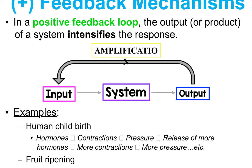Another example of positive feedback is childbirth. Hormones instigate contractions, contractions cause pressure, and that pressure releases more hormones which cause more contractions and more pressure. Or fruit ripening: fruit ripens and releases ethylene gas, which signals neighboring fruit to ripen as well. Then all the neighboring fruit starts ripening, releasing more ethylene gas, causing even more fruit to start ripening.